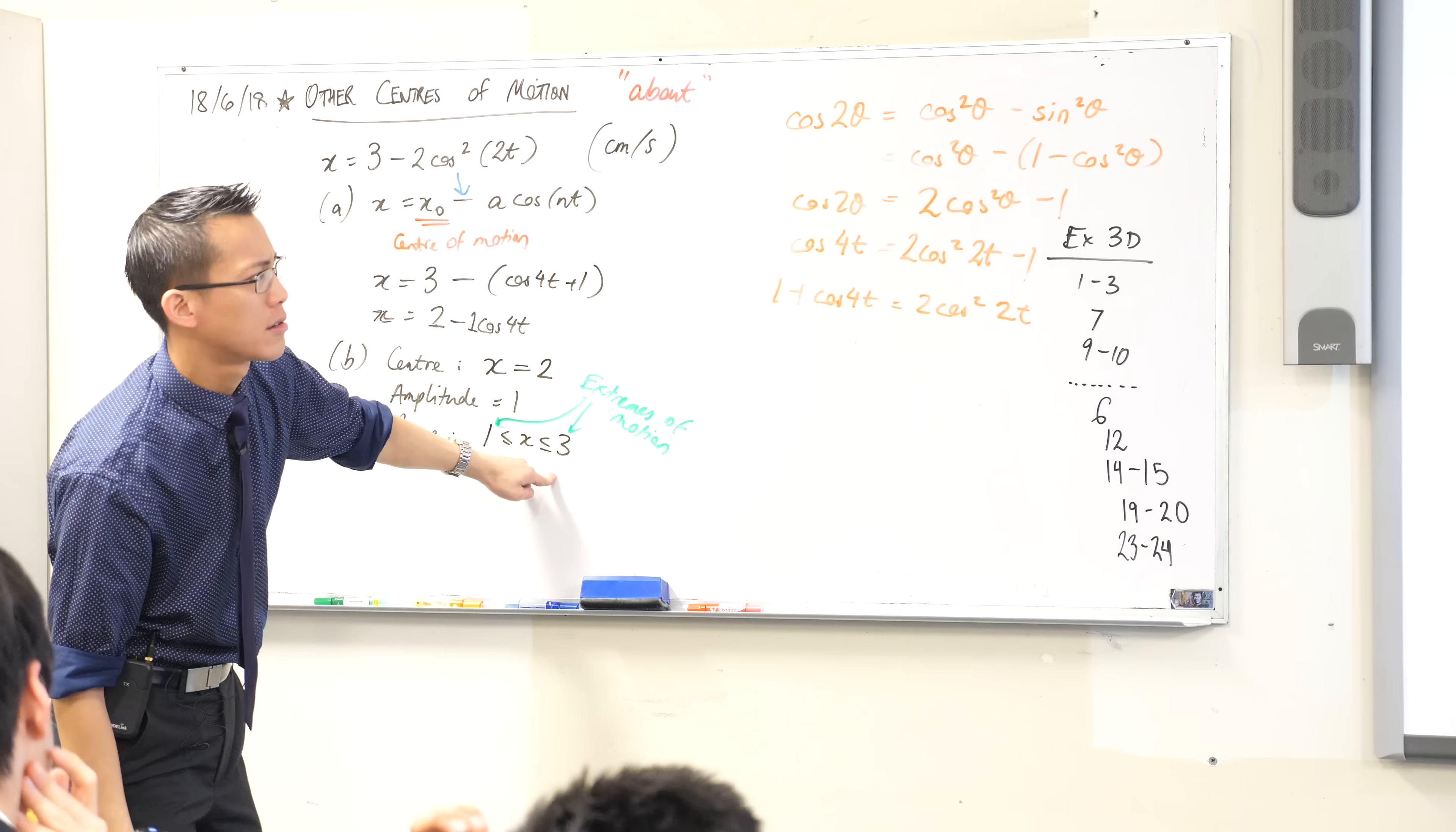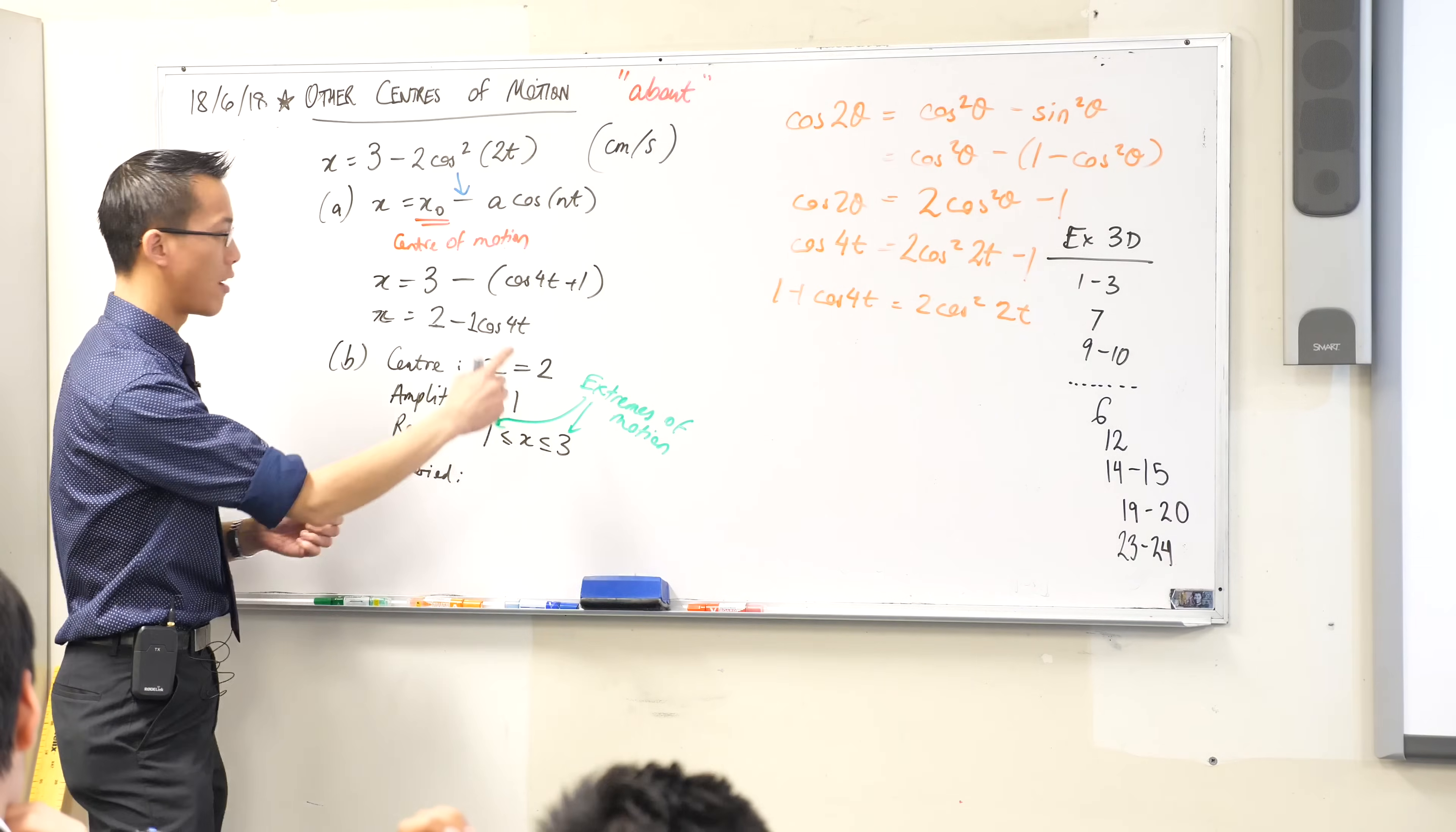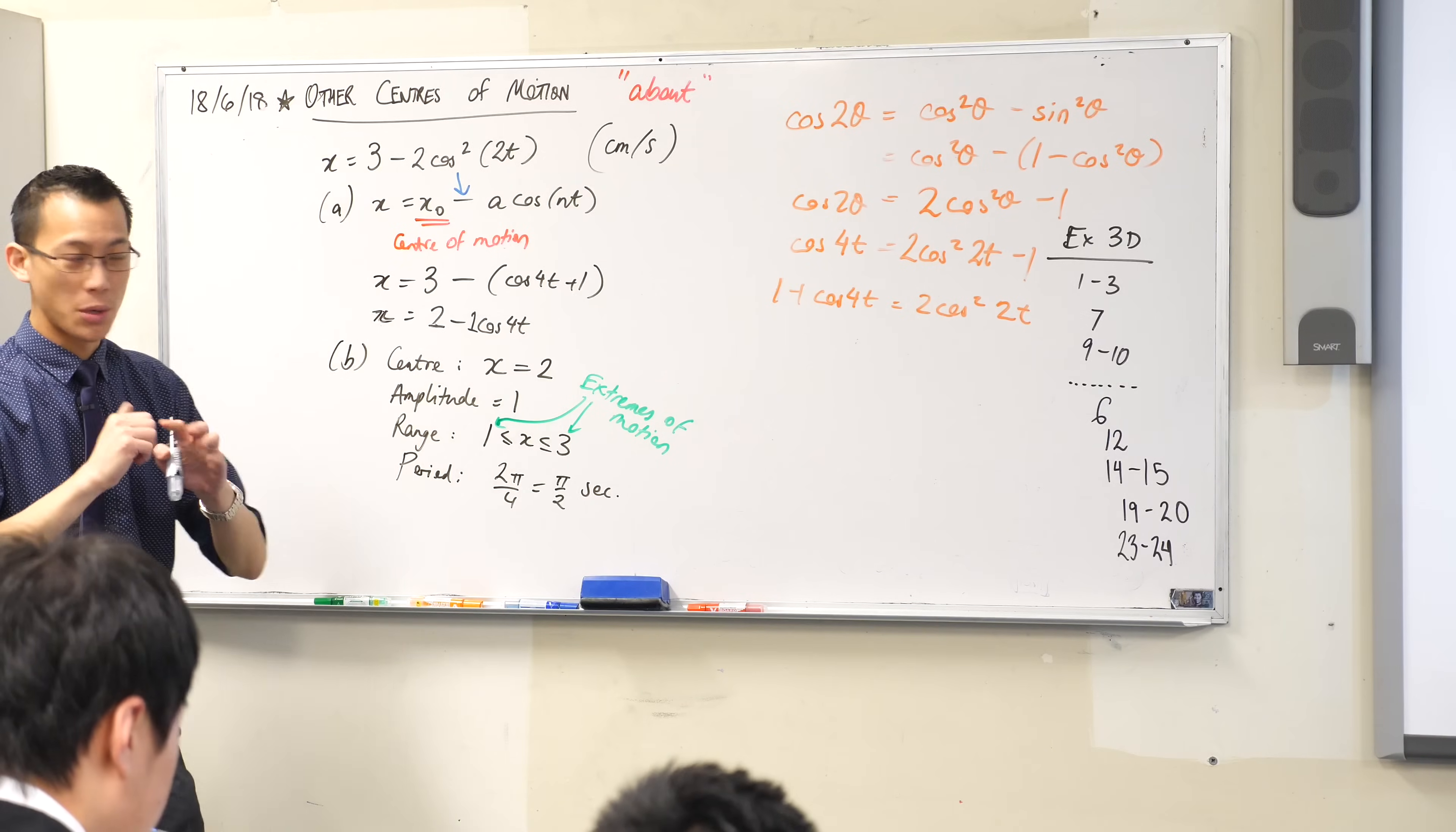Do they ask us for anything else? The period. Okay. Where do we get period from? We actually looked at this in the previous example in question 9, right? It's going to be 2 pi on n, which in this case is 4. So that'll be 2 pi on 4, which is pi on 2 seconds. There you go. Okay. Right. So we've got it all together.